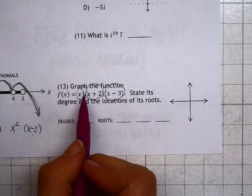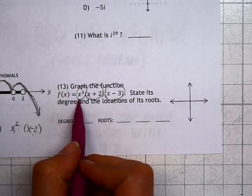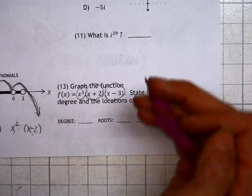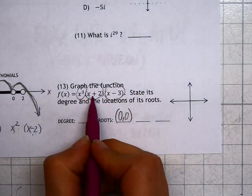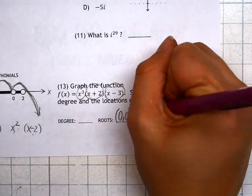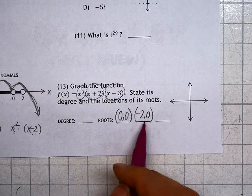Each factor gives us a root. Since x is by itself, doesn't have any parentheses around it, we know that the first root must be at 0, which we write as (0, 0). This next one is x plus 2, which means we have a root at negative 2, (-2, 0).